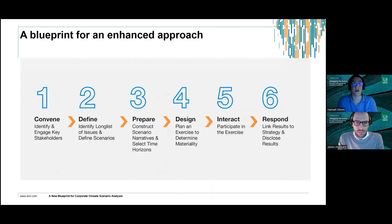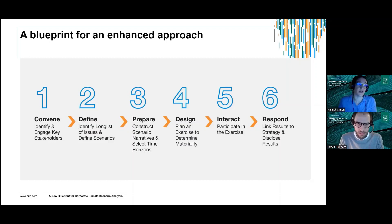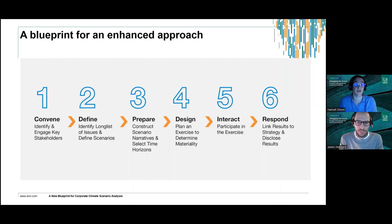On the screen here we've got a summary of what the six-step blueprint is. Our process really starts with a convening step — identifying a core group that will drive the scenario analysis process and choosing key decision-making stakeholders to participate. A key aspect of the six-step approach is to really engage senior stakeholders who make the decisions. This first step is about making sure we've got the right people in the room and demonstrating the business case for why scenario analysis is important.